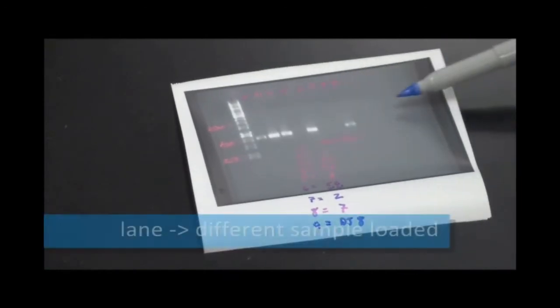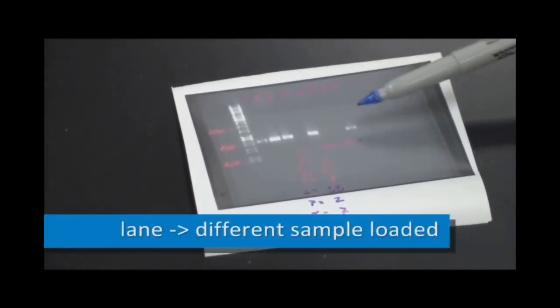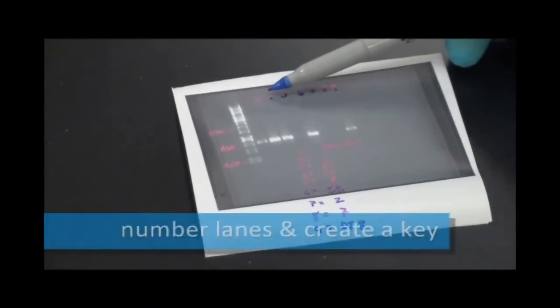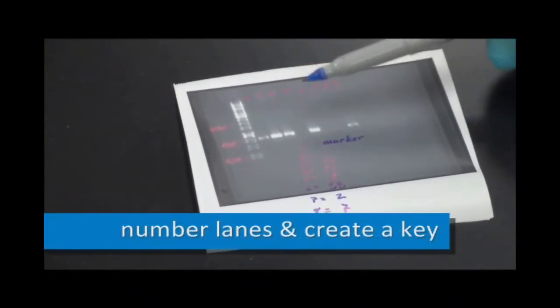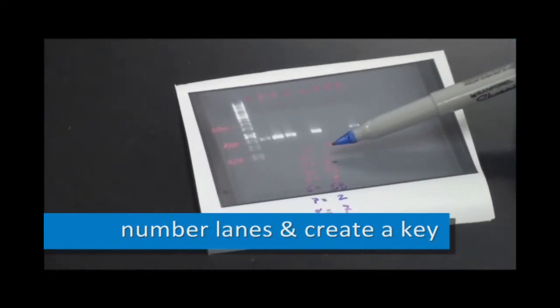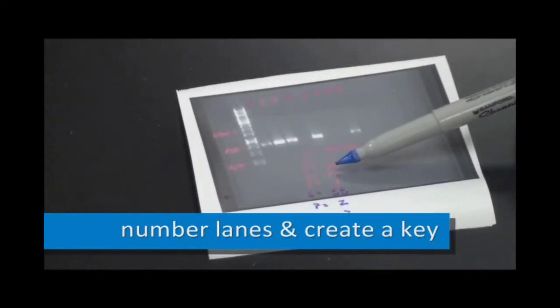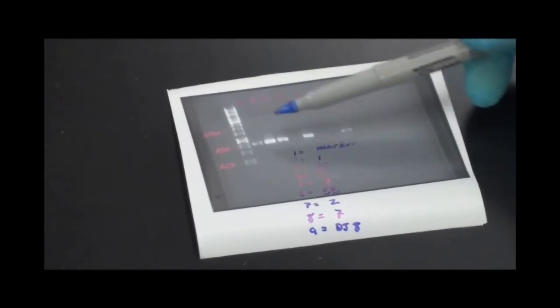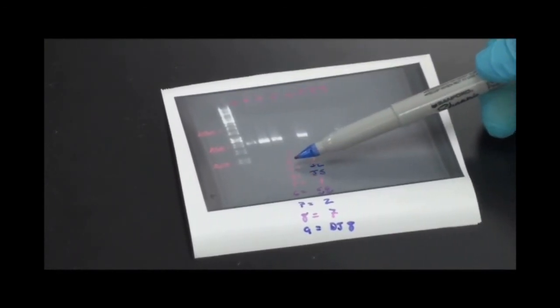Here across this way, each lane represents a different sample that was loaded. And so you can actually number the lanes across the top to help us identify the different lanes. And then right here I've got a key of the labels that were on the different samples from PCR that I loaded. So you can see lane 1 was the marker protein. Lane 2 was sample number 1. Lane 3 was sample number 3C is what it was labeled.